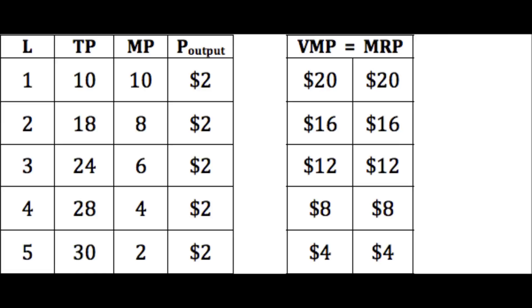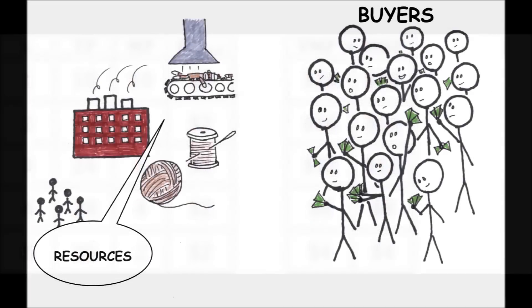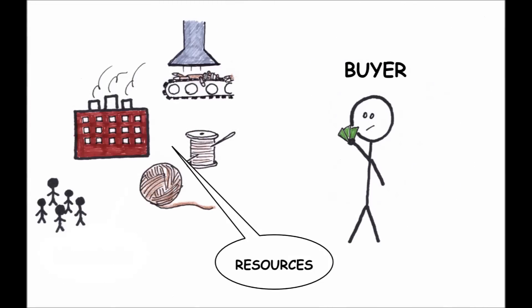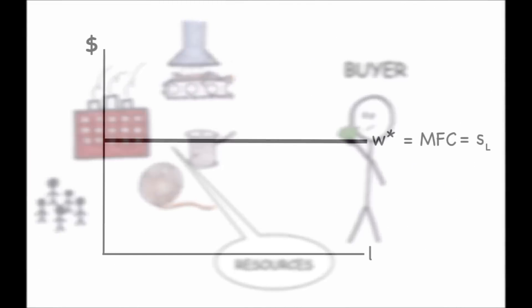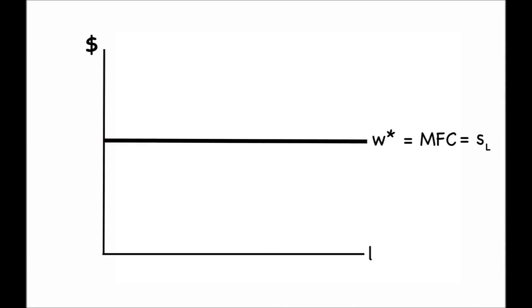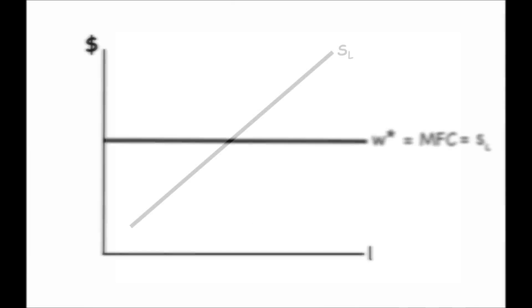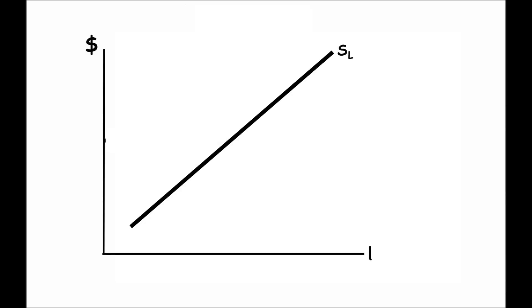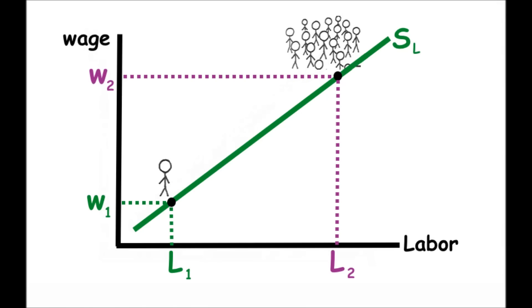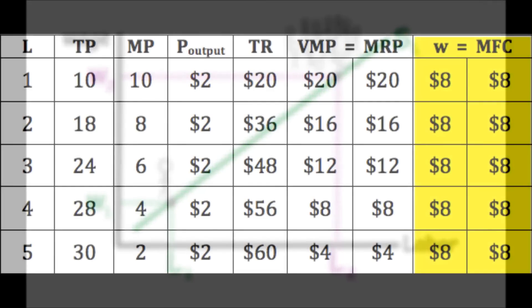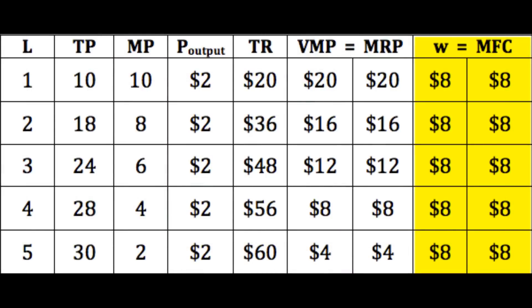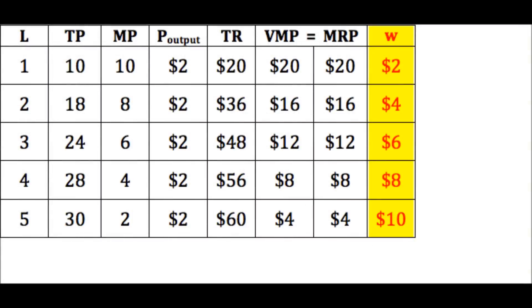The difference comes in when we change from a perfectly competitive factor market to a monopsonistic factor market. We change from having a small firm facing a perfectly elastic supply of labor and therefore constant wage, to having a single large firm facing the entire industry supply of labor, where wage will rise as the firm tries to attract more labor. In the data table, this means that rather than having a wage that's constant at $8, the wage now rises the more labor is hired.